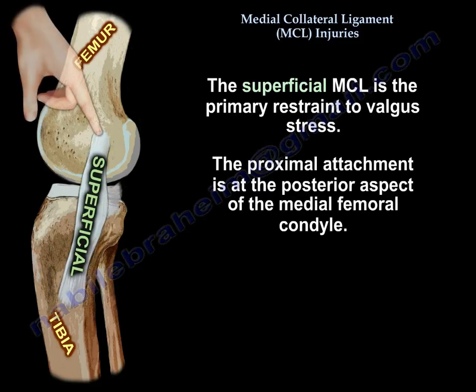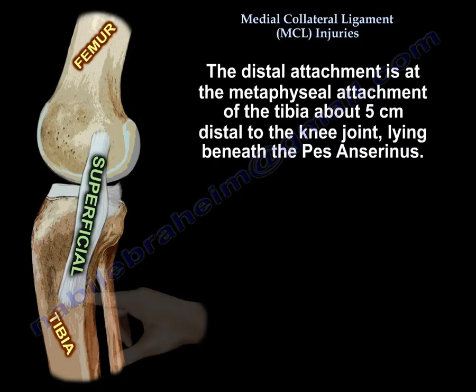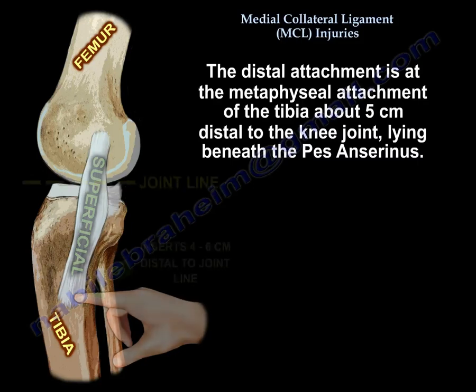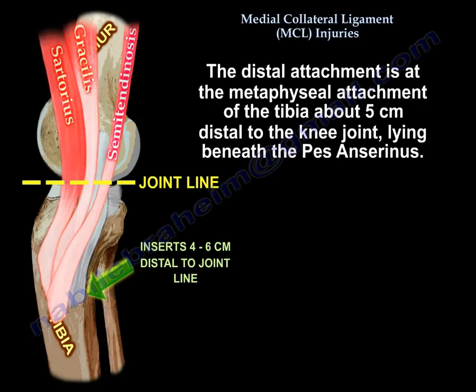The proximal attachment is at the posterior aspect of the medial femoral condyle. The distal attachment is in the metaphyseal region of the tibia, about 5 cm distal to the joint line, lying beneath the pes anserinus.